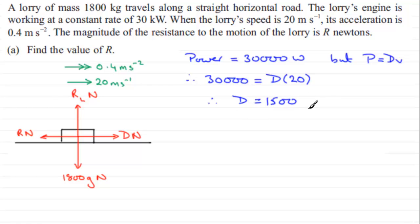Now that we've got that driving force, we can apply Newton's second law, that is force equals mass times acceleration by resolving to the right. So we've got the driving force, 1,500, minus the resistance here, R, is going to equal the mass, which is 1,800 kilograms, multiplied by the acceleration, which is 0.4.